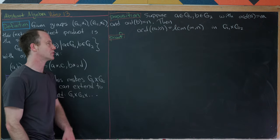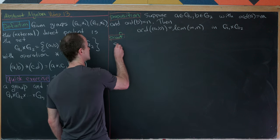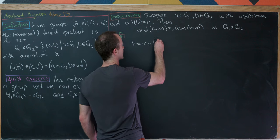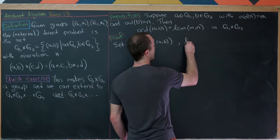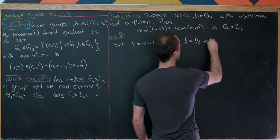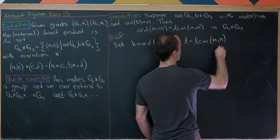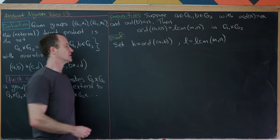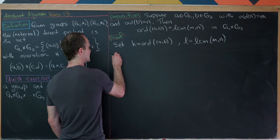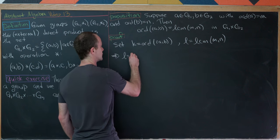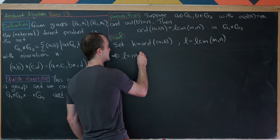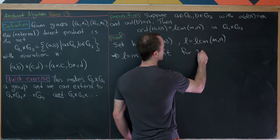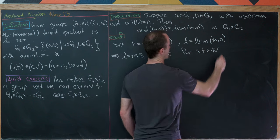Let's get into the proof. Set k equal to the order of (a, b) and l equal to the LCM of m and n. Since l is the LCM of m and n, we know l = m·s and l = n·t for some natural numbers s and t — this is just using the fact that the LCM is a common multiple.